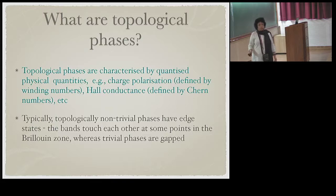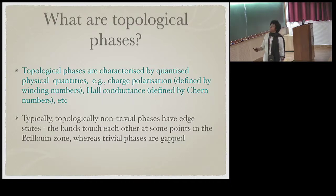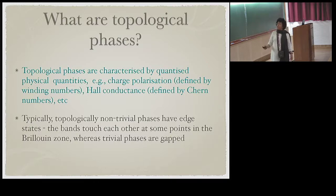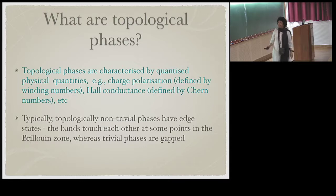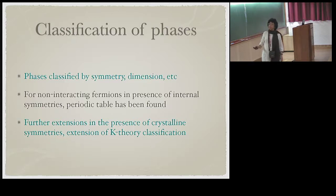What are topological phases? They're characterized by topological quantities such as charge polarizations defined by winding numbers, conductances defined by Chern numbers, etc. Typically, topologically non-trivial phases have edge states; the bands touch each other at some points in the Brillouin zone, whereas trivial phases are gapped. The classification of phases by symmetry, dimension, etc. has been discussed in detail — for non-interacting fermions with internal symmetry, a periodic table has been found, with further extensions for crystalline symmetries and K-theory classification.